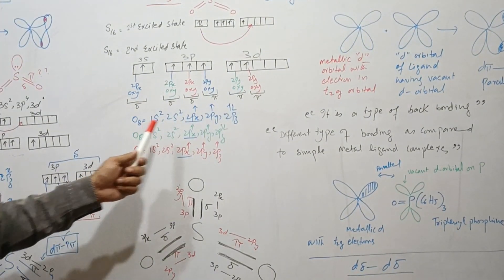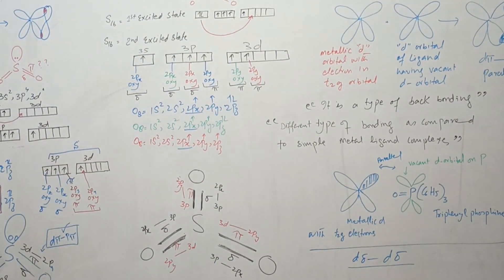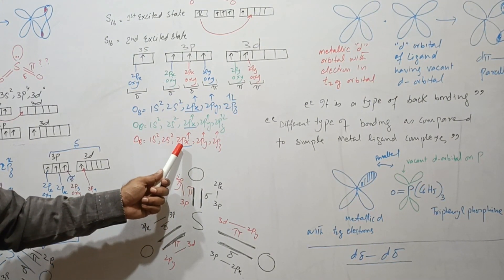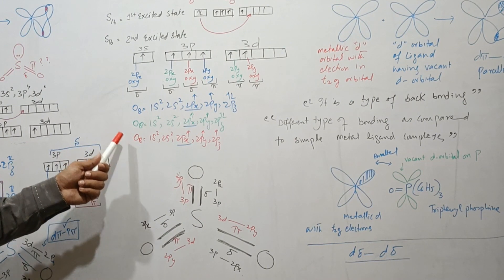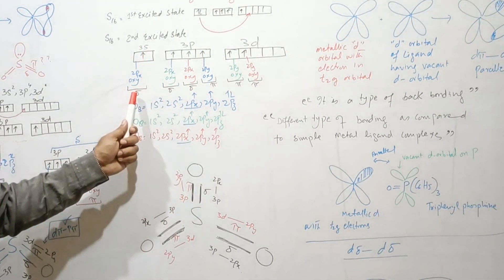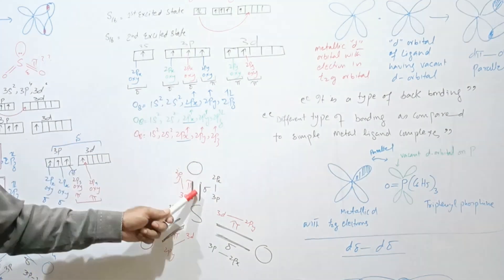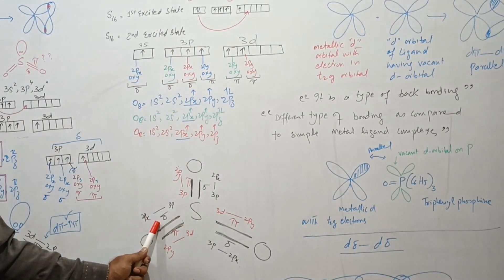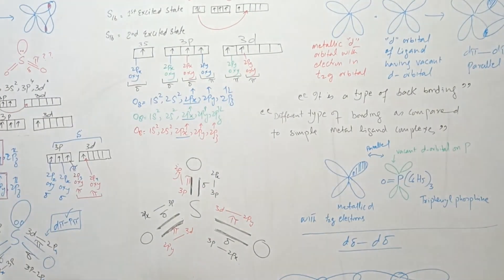In SO3, there are three 2px orbitals and three 2py orbitals on the three oxygen atoms. The 2px orbitals of the three oxygens overlap linearly with orbitals of sulfur — first the 3s of sulfur overlaps linearly with 2px of one oxygen forming a sigma bond, then 3p of sulfur overlaps 2px of another oxygen forming another sigma bond, and similarly the third 2px overlaps the 3p of sulfur giving a third sigma bond — so three sigma bonds are formed in total.